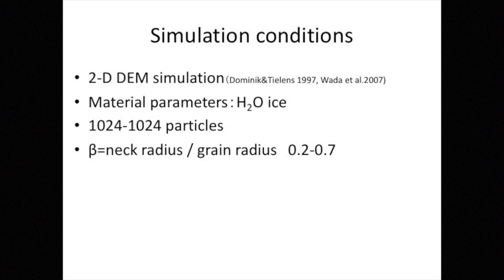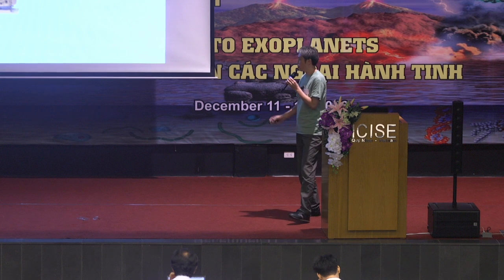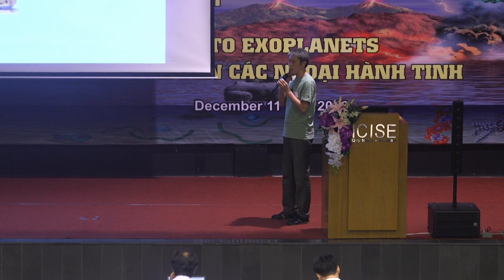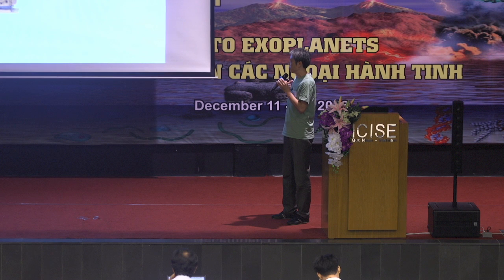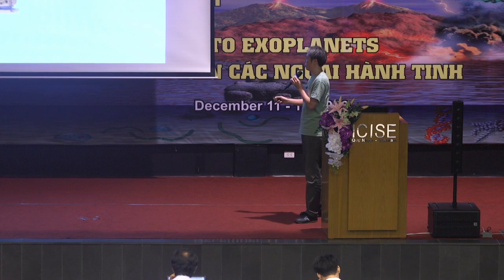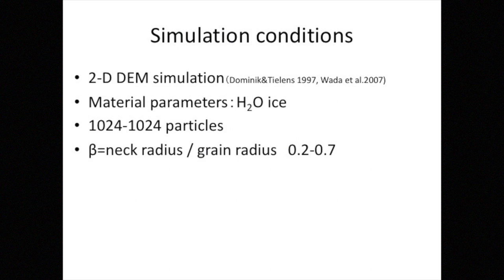And these are the conditions of numerical simulations. Unfortunately, my simulation is 2D. 3D code is now under construction. And the material parameters are H2O ice and 1,000 to 1,000 particles. And an important parameter is beta, which is the ratio between the radius of a neck to the radius of a grain. And I varied this value from 0.2 to 0.7.